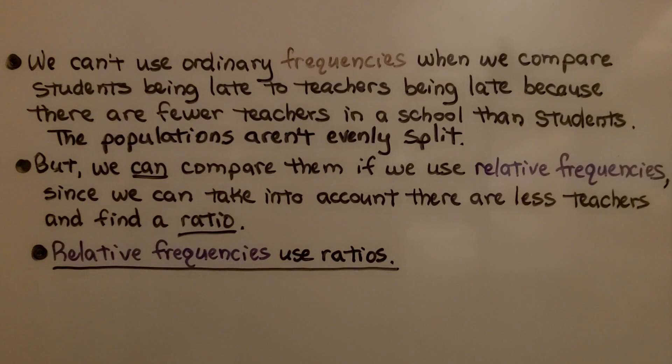Now remember, a frequency is just the number of times an event occurs, but a relative frequency is a ratio of the number of times the event occurs to the total number of events. It's a fraction.